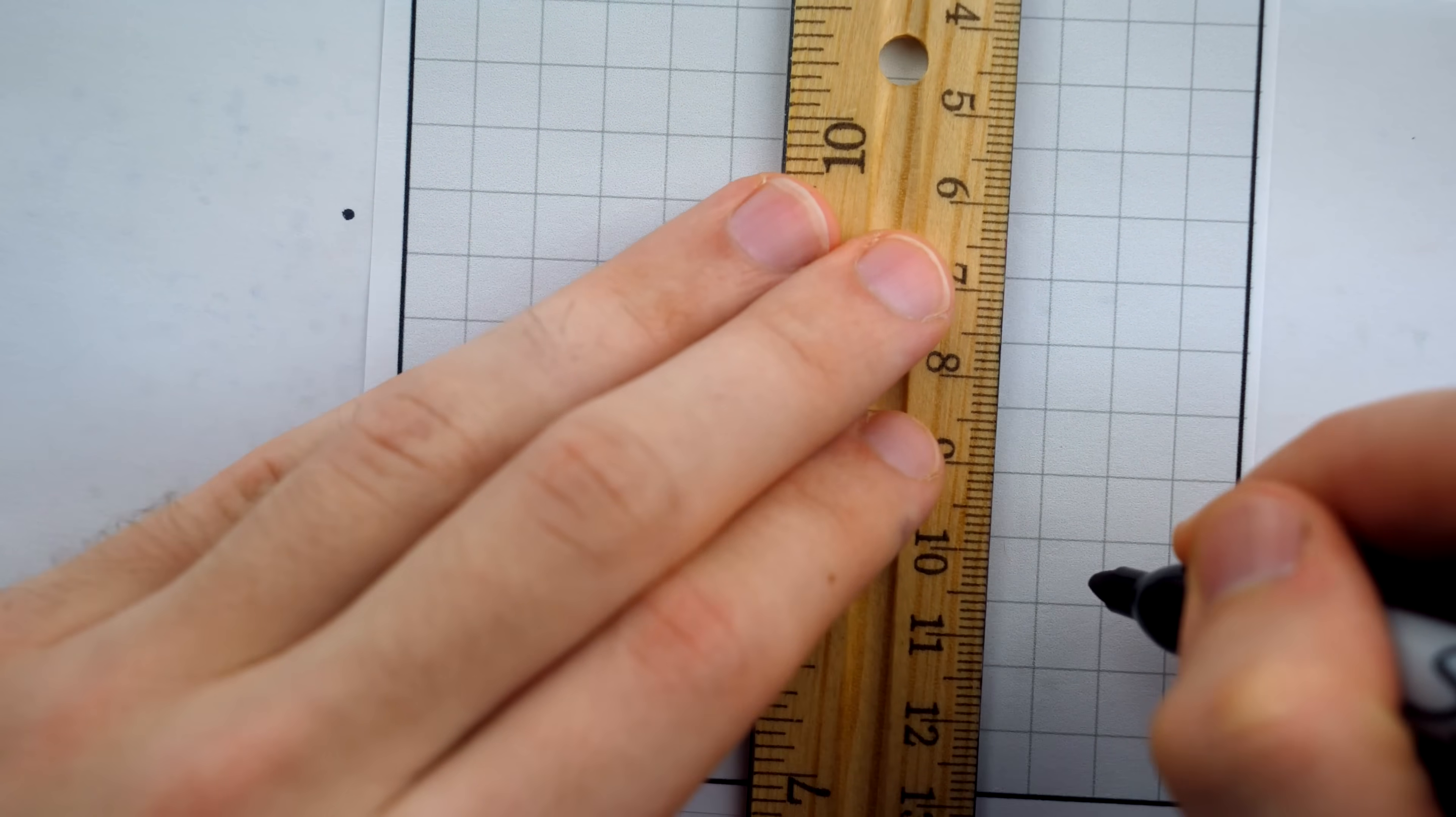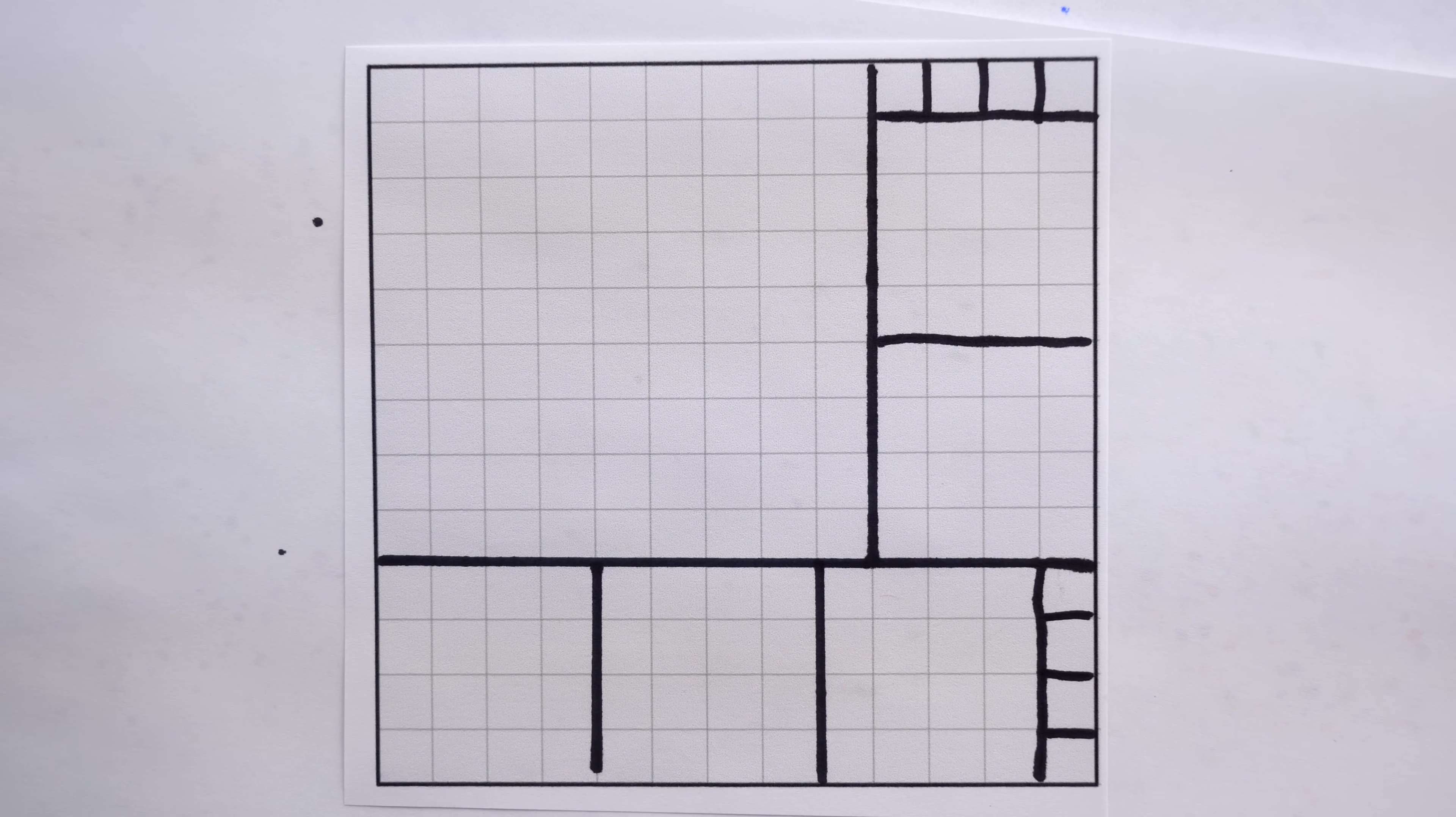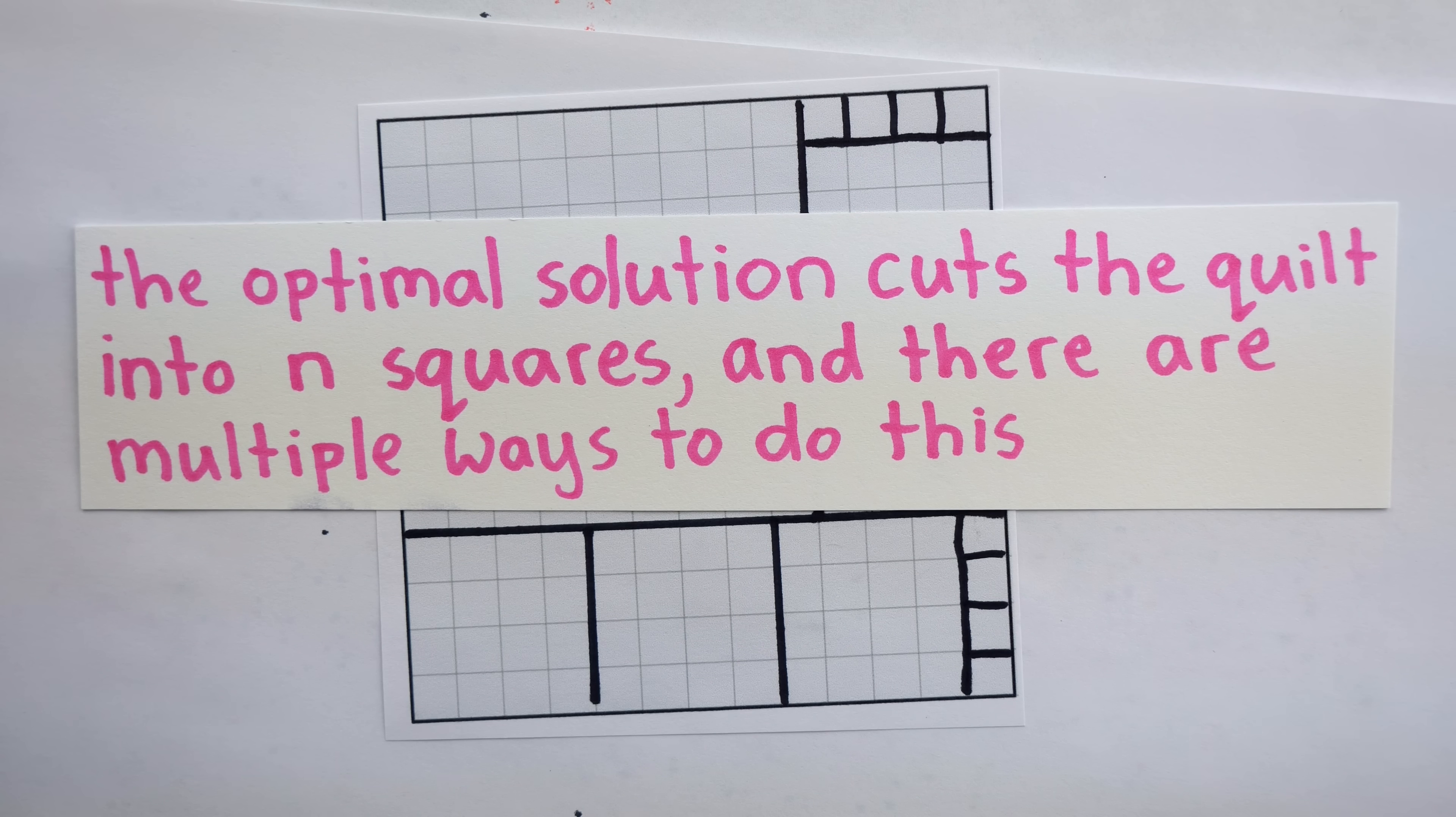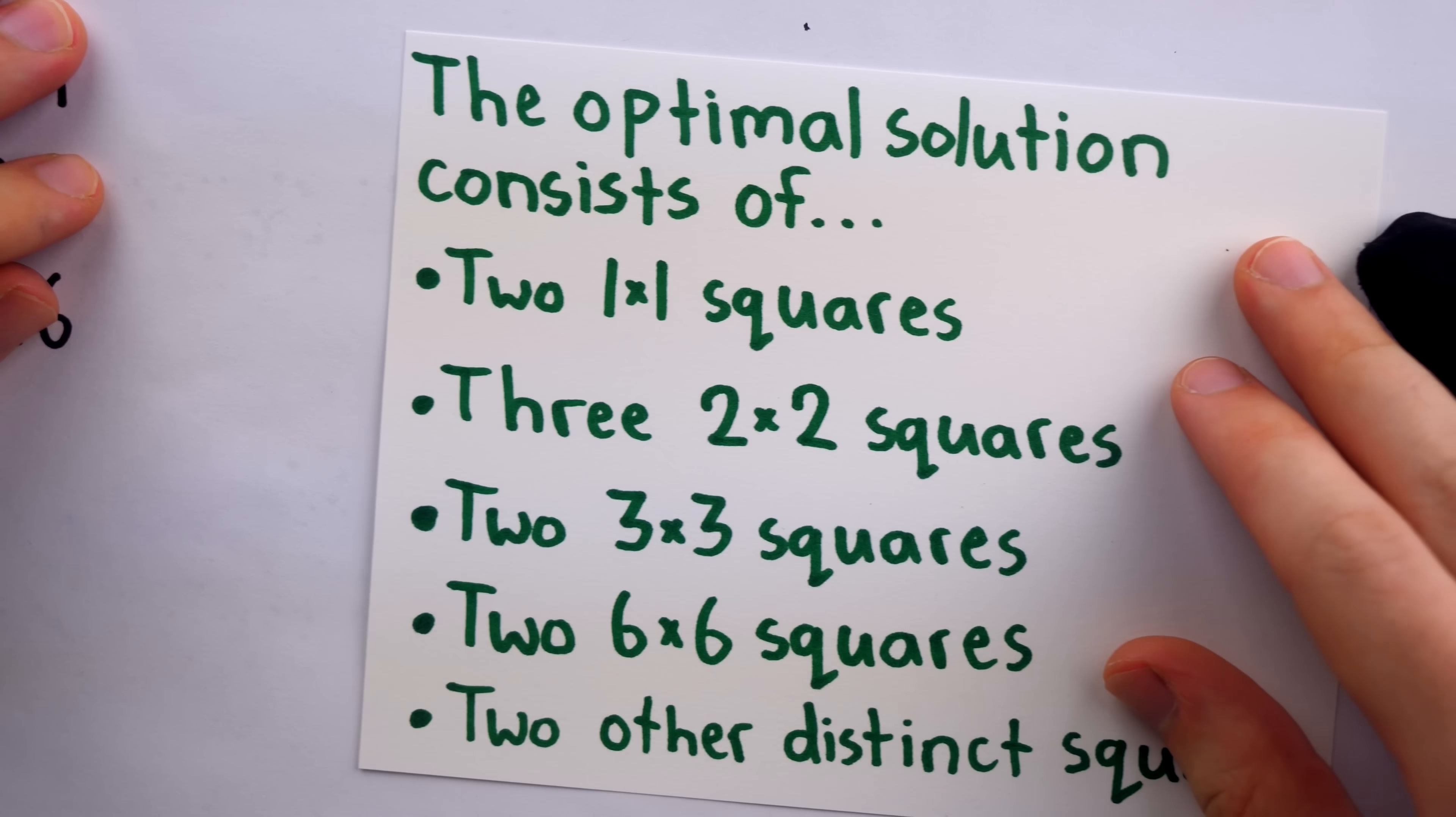For example, here's a 14 square solution I found by just trying to avoid those troublesome long strips. But it's unlikely you're going to find the best solution. Because up to symmetry, there is only one optimal solution. So it's not the case that the optimal solution cuts the quilt into N squares and there are multiple ways to do this. No, ignoring symmetries of the one solution, there is only one way to get the optimal cut of this quilt into pieces. Now, if you want to continue playing around with the puzzle, let me just give you some hints about the optimal solution before I spoil it.